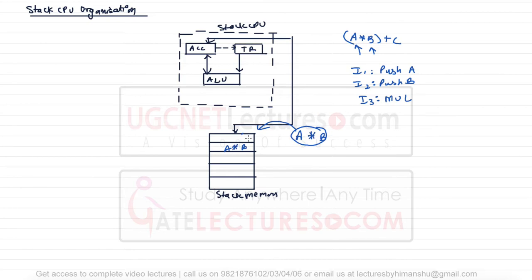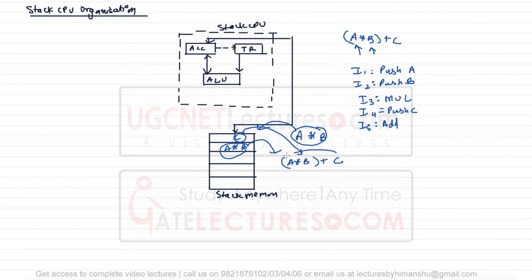After storing a × b in the stack, instruction 4 is PUSH c — so c is pushed into the stack. Then instruction 5 is ADD: c will be popped out, a × b will be popped out, addition is performed between them, and the result is stored back into the stack. So to perform a × b + c, we needed five instructions. The variables are in memory, and the pop instructions are internally associated with the multiply or add — it is hardware responsibility, not the user's.